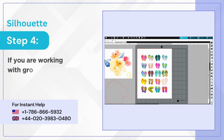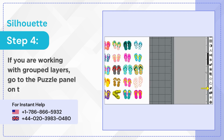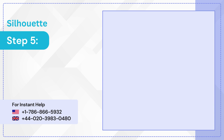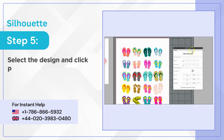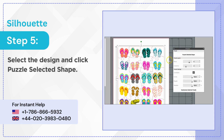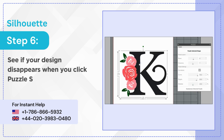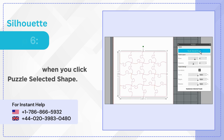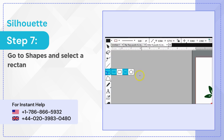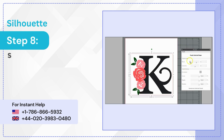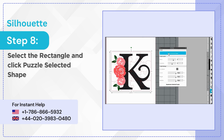Step 4: If you are working with grouped layers, go to the puzzle panel on the right toolbar. Step 5: Select the design and click Puzzle Selected Shape. Step 6: See if your design disappears when you click Puzzle Selected Shape. Step 7: Go to Shapes and select a rectangle, then click and draw a rectangle around the design. Step 8: Select the rectangle and click Puzzle Selected Shape.